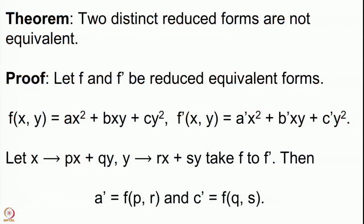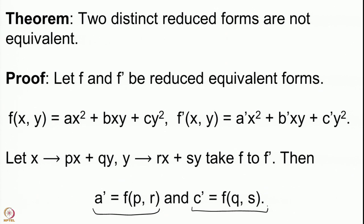We prove the result by analyzing inequalities for a prime, b prime, and c prime. We note that a prime is given by f(p, r) and c prime is given by f(q, s). There is also a formula for b prime in terms of a, b, c and p, q, r, s which we will use later. The change of variables can be remembered via the 2×2 matrix with entries p, q, r, s having integer entries and determinant equal to +1 — that is the most important constraint.